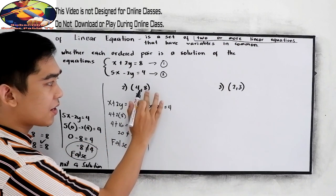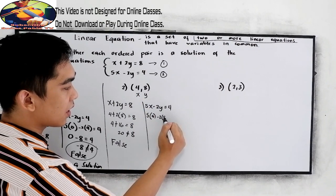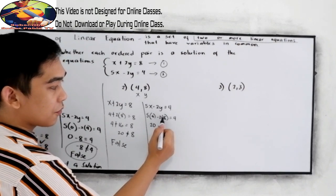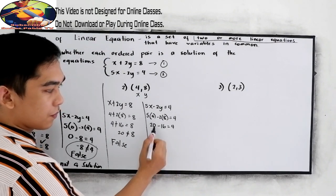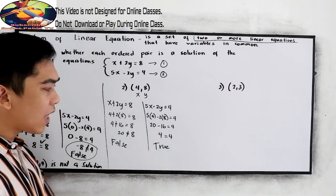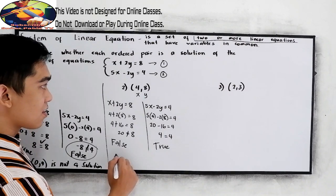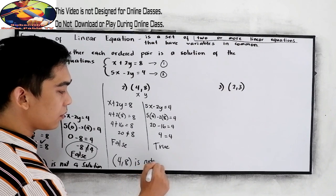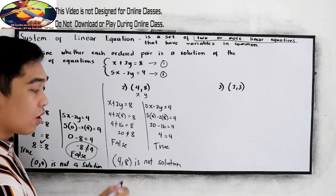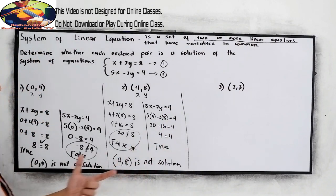Let us still check the other equation: 5 times 4 minus 2 times 8 equals 4. That gives 20 minus 16 equals 4, which is true. Although equation 2 gives a true answer, (4, 8) is still not a solution of the system, because equation 1 gives a false answer — just like in example number 1.